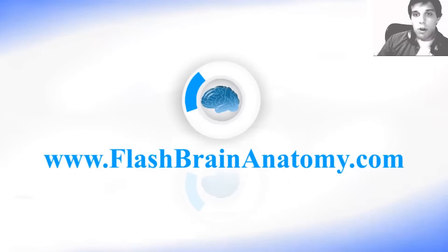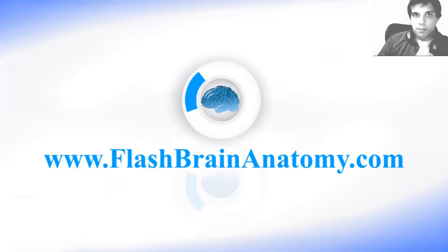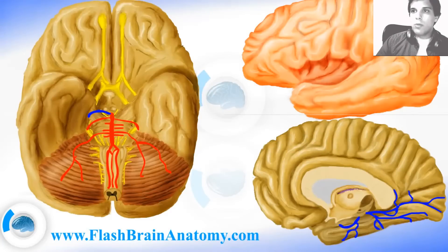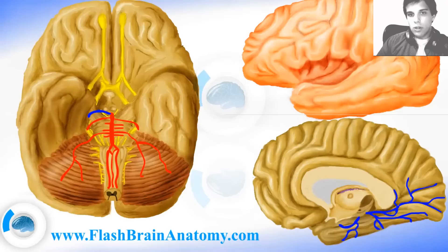These lessons come as part of my software, Flash Brain Anatomy — there's a link in the description. There is also a parietal branch and a parietal occipital branch in the sulcus here. To more easily learn the names of these arteries, you should first learn the surface of the brain — the sulci and gyri — and then learning these names is way, way easier.